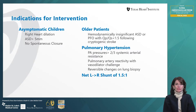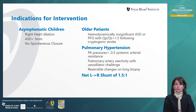Indications for interatrial septal intervention include ASDs and PFOs. In asymptomatic children, ASDs should be closed if there's evidence of right heart dilatation, if the ASD measures more than five millimeters, and if the child grows with no spontaneous closure. In older patients, hemodynamically significant ASDs are defined as a Qp:Qs greater than 1.5 and should be closed, particularly with elevated pulmonary artery pressure, pulmonary vasoreactivity, or reversible changes on lung biopsy. We also have an indication for closing hemodynamically insignificant ASDs or PFOs with Qp:Qs less than 1.5 if the patient has had a cryptogenic stroke.